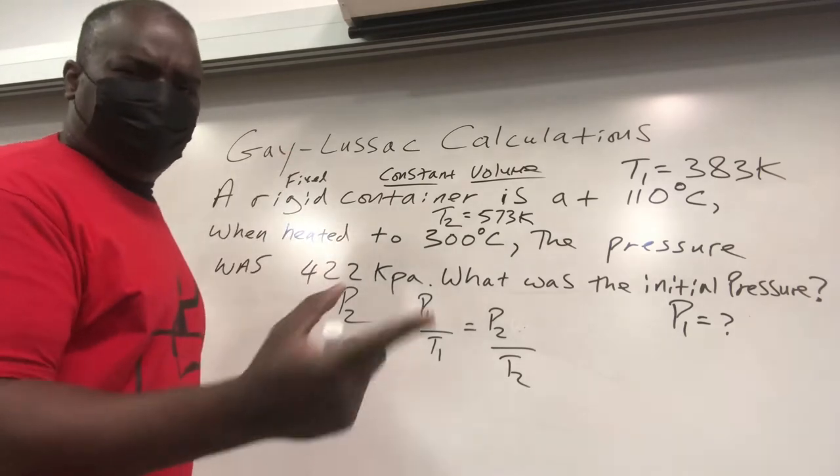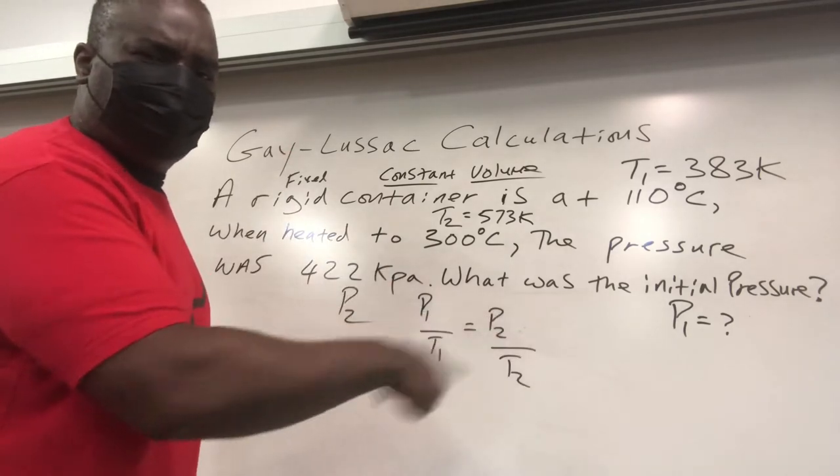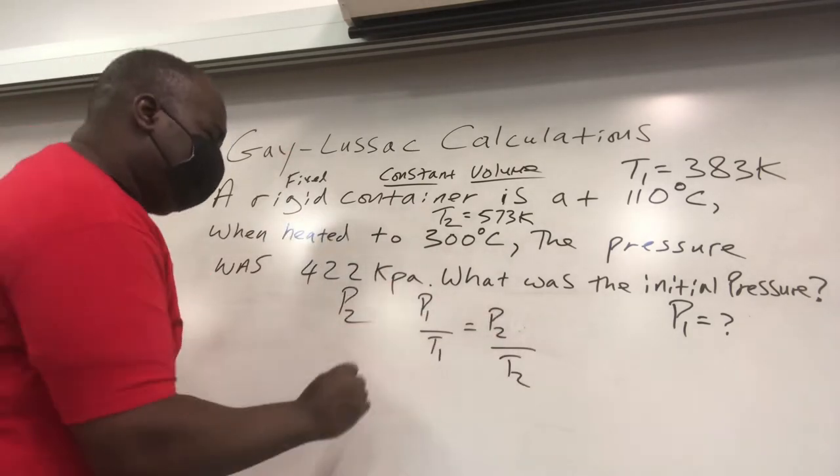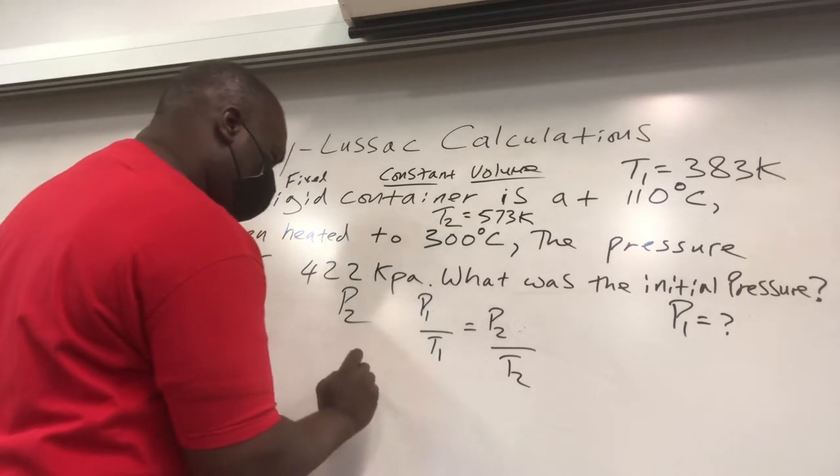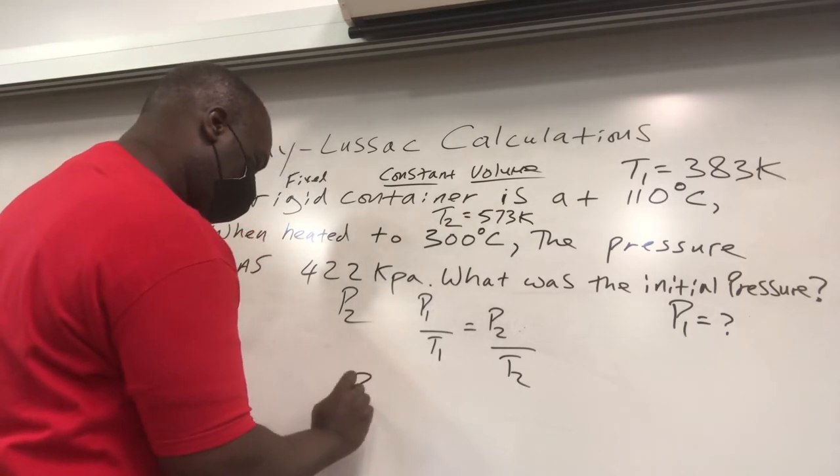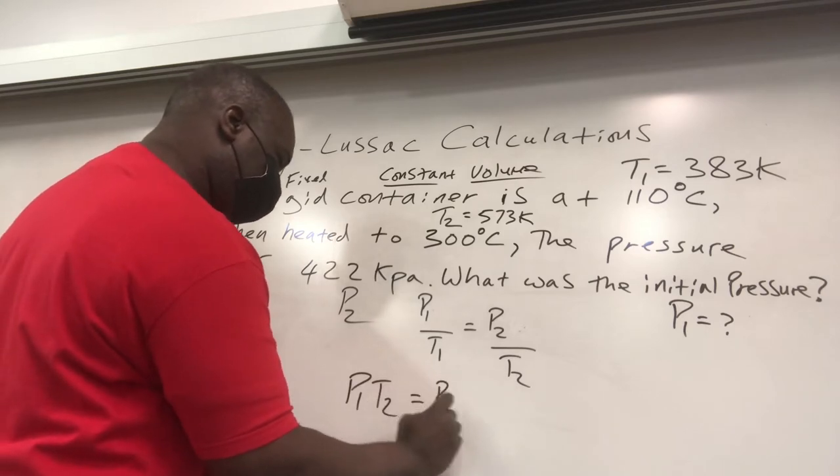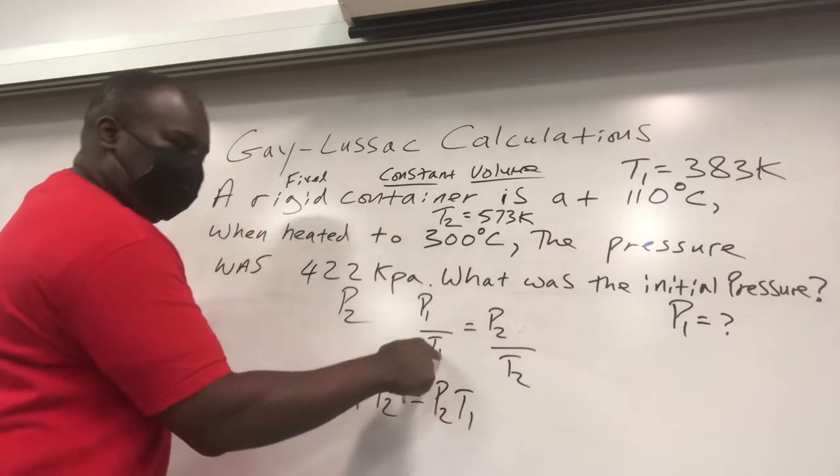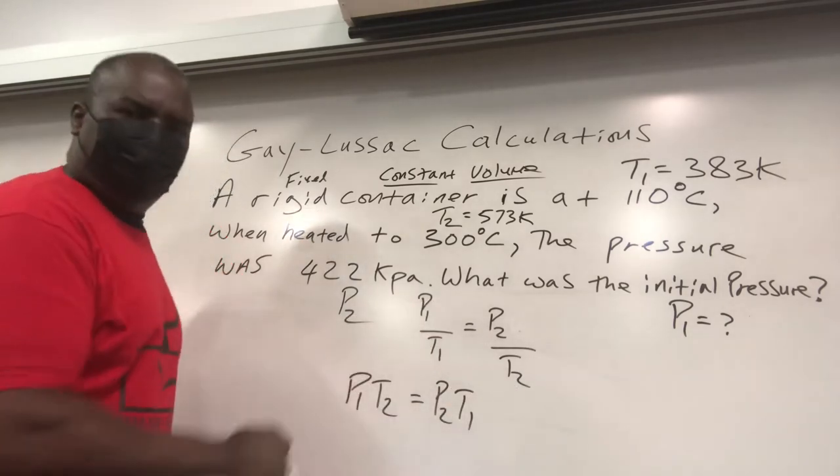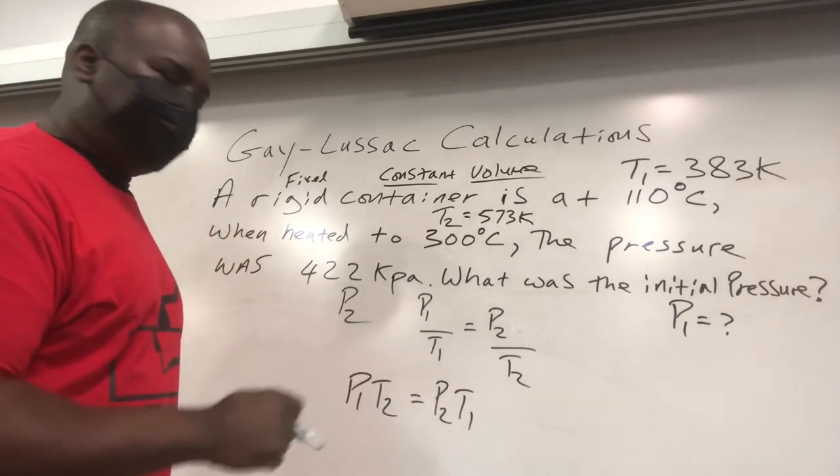Now we have P1 over T1 equals to P2 over T2. I always like to criss-cross the temperatures. So what do we get? We get P1 T2 equals to P2 T1. This T1 goes over there, this T2 goes over there, cross-multiply properly.